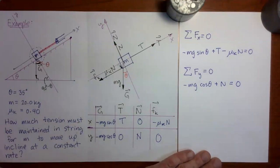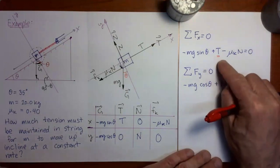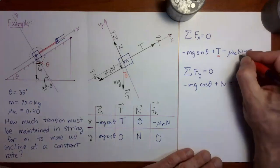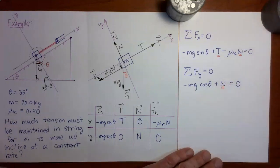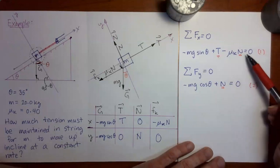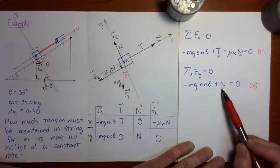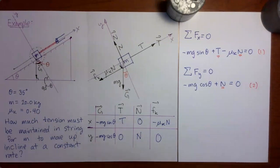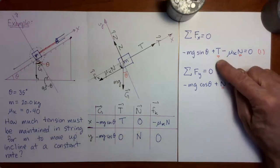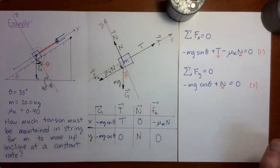Now let's go into the algebra. We are trying to solve for the tension. The only other unknown in these two equations is the normal force. Let's label them equation one and equation two. I want to remind you that we always want to work symbolically until the very last step — solve for tension in terms of symbols first, then substitute numerical values with correct units to get a numerical answer.